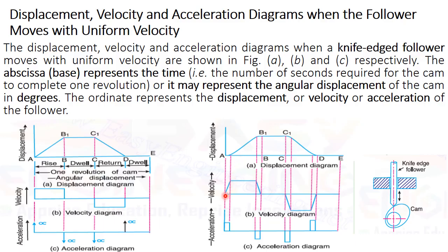With the help of the displacement diagram, we present the actual velocity diagram. We draw a line showing velocity increasing gradually with respect to time, after which velocity is constant. Then it decreases. During the dwell time, there is no velocity as the follower is at rest. Then velocity increases in the negative direction. From C1 to D, velocity is constant with respect to time.